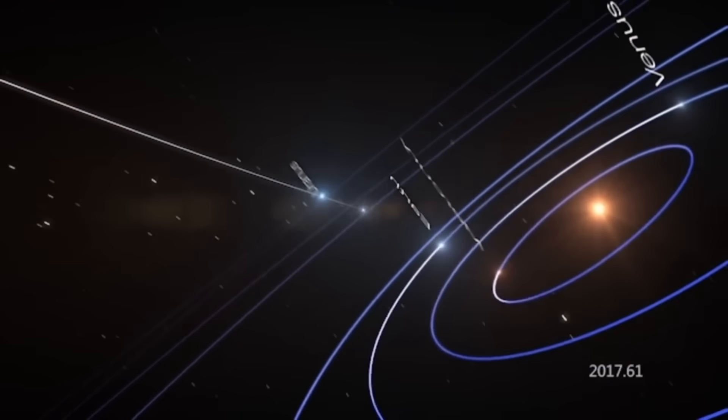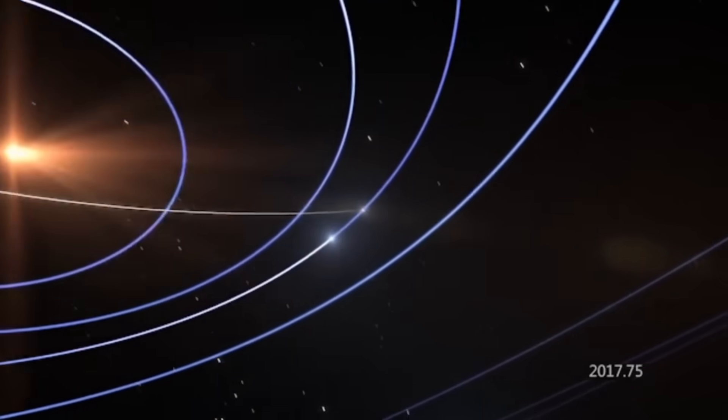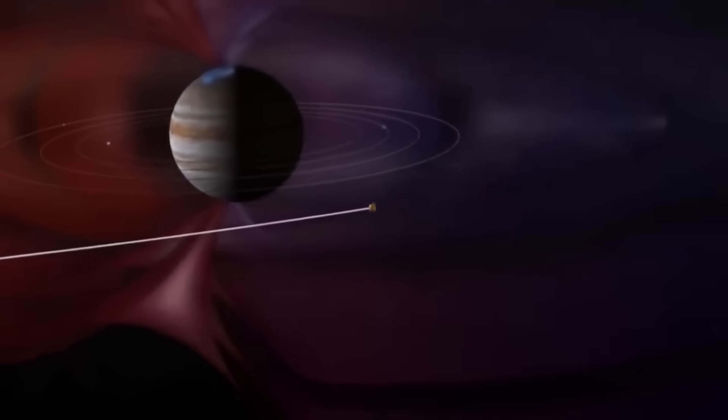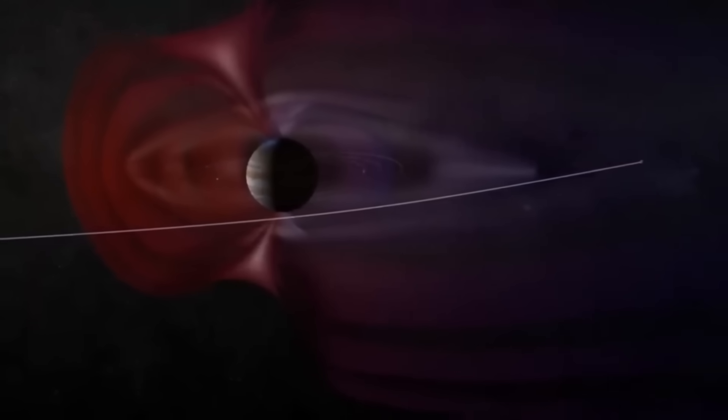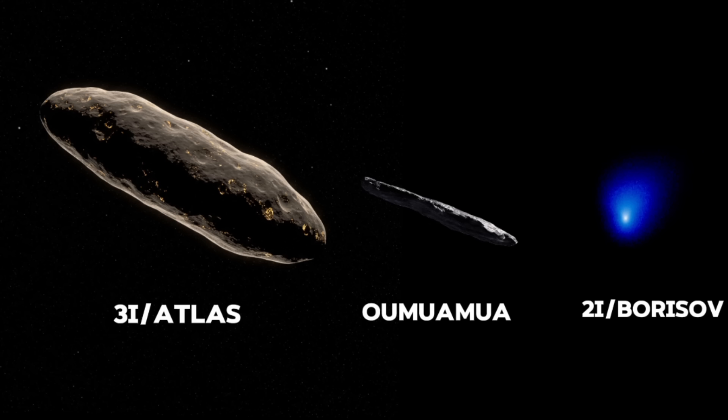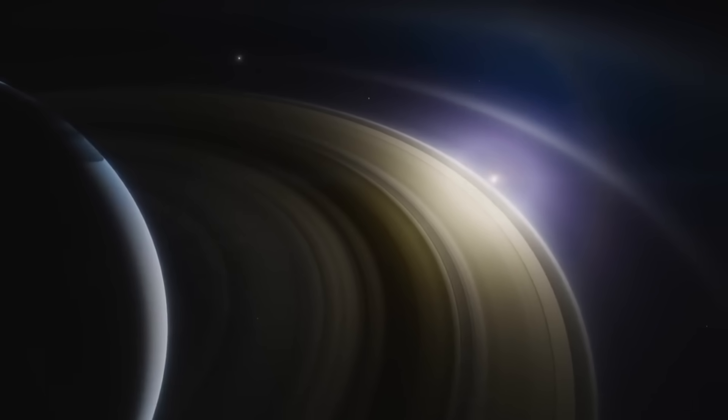Before the discovery of Oumuamua in 2017, not a single interstellar object had ever been confirmed passing through our solar system. Now, within just a few years, we've identified three. Some scientists find this deeply puzzling. After centuries of silence, why are we suddenly seeing these visitors from other star systems?